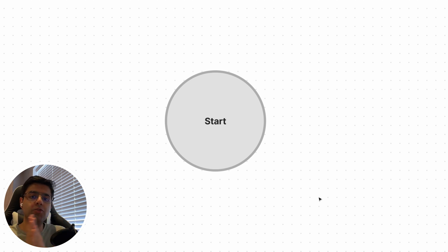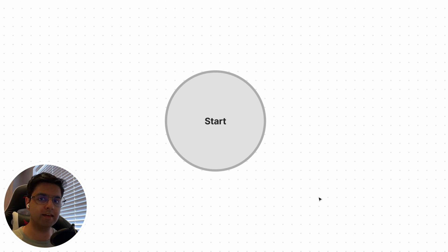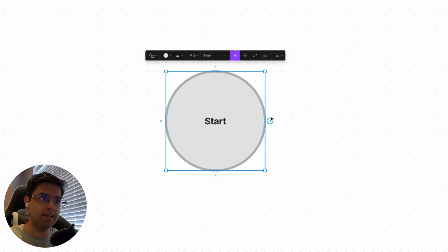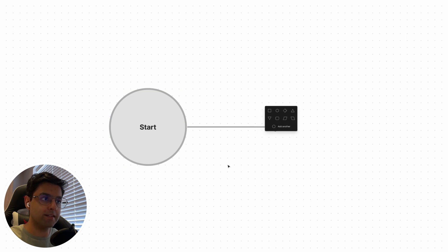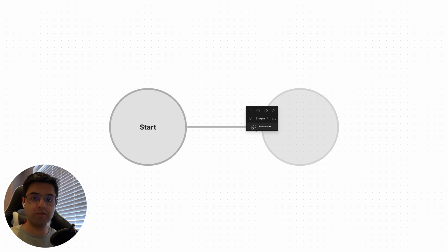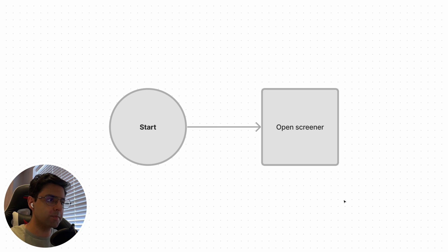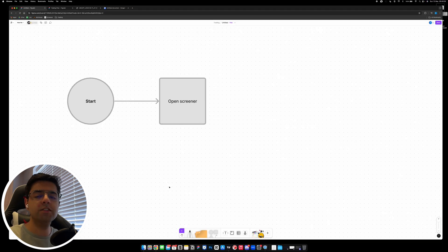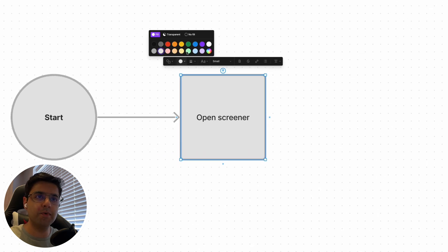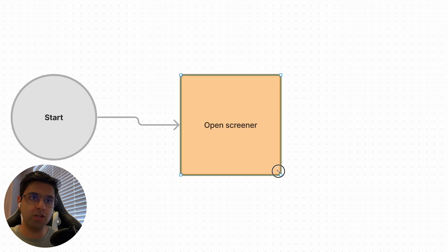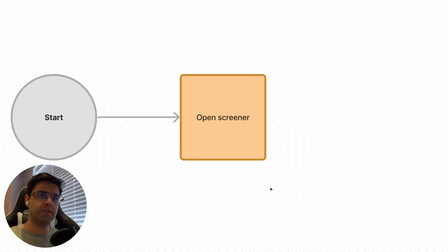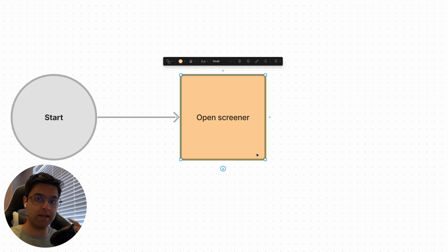The first thing I do is use a screener to identify markets I want to trade that day. I'll click the circle to load the side options, drag out a line, then use a square for the instruction. I'll type 'Open screener,' then color it orange for instructions. Next I'll add a decision diamond — clicking and dragging out from the previous node — and type 'FX in good context?' I'll change its color to light blue. Diamonds are for decisions; squares are for instructions.